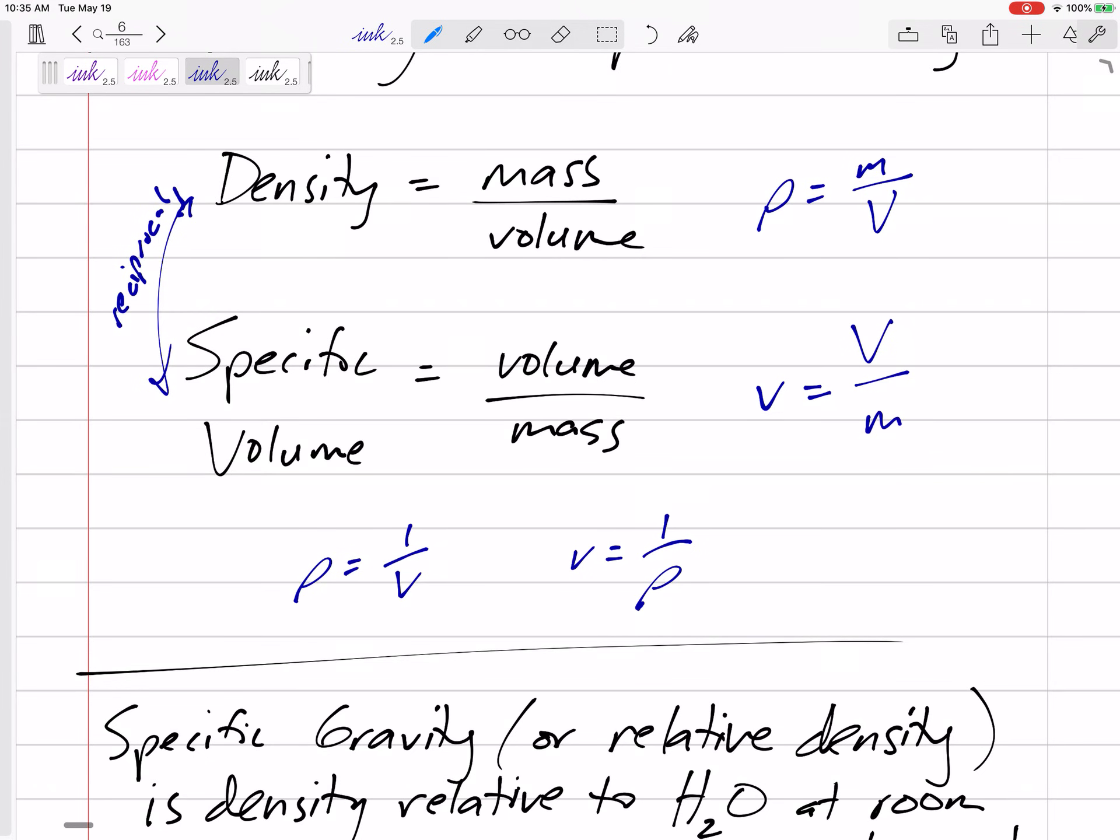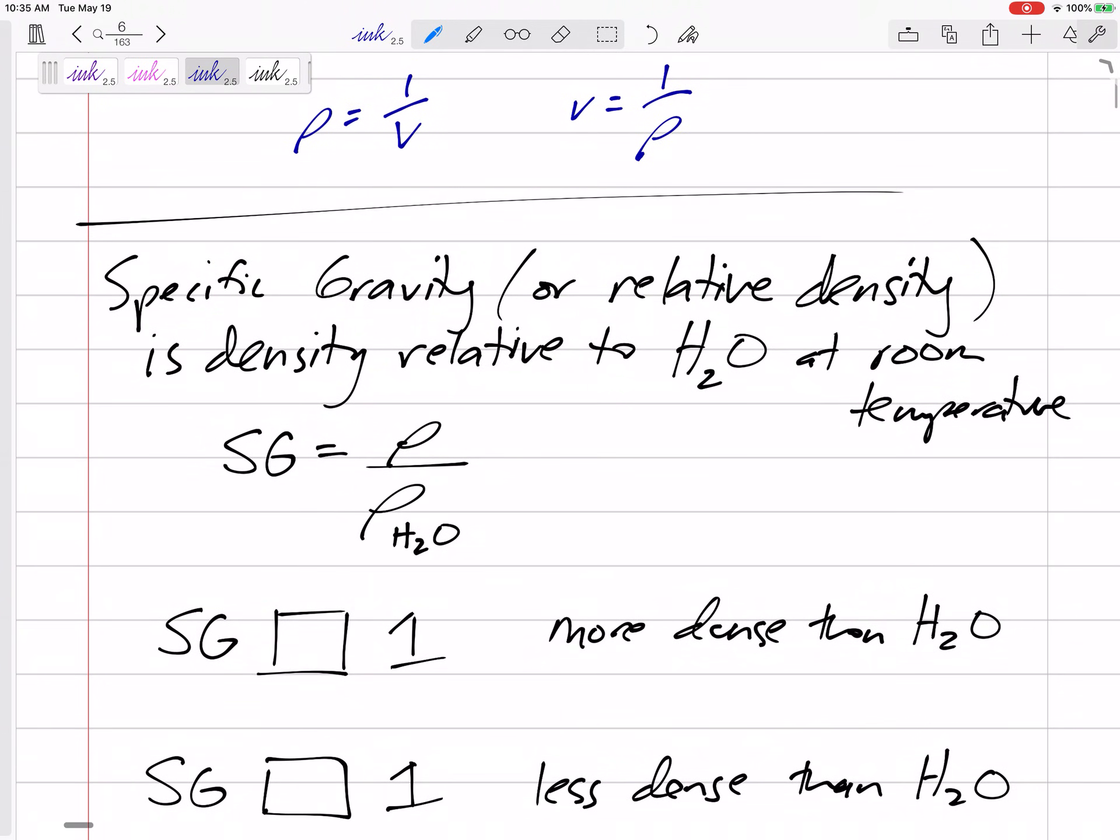Now, specific gravity or relative density is the density relative to water at room temperature. So the specific gravity, it might say this mercury has a specific gravity of 13.6. That means it is 13.6 times more dense than water at room temperature.